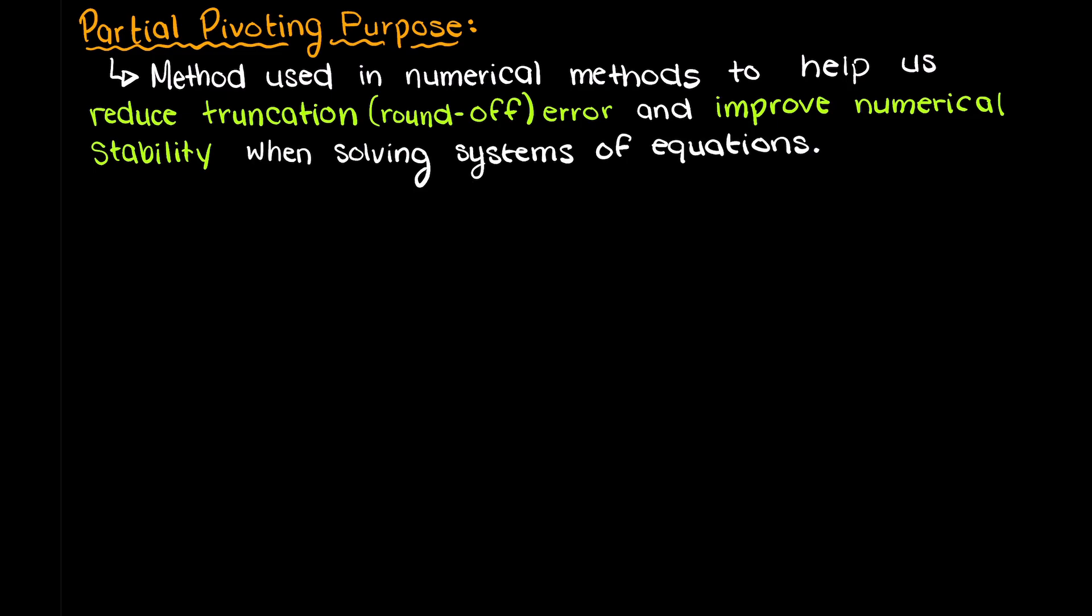It is essentially a tool that will help us better solve our numerical methods problems. In brief, we use partial pivoting to get more accurate answers when solving systems of equation problems, and it prevents us from having a zero on our main diagonal if at all possible.